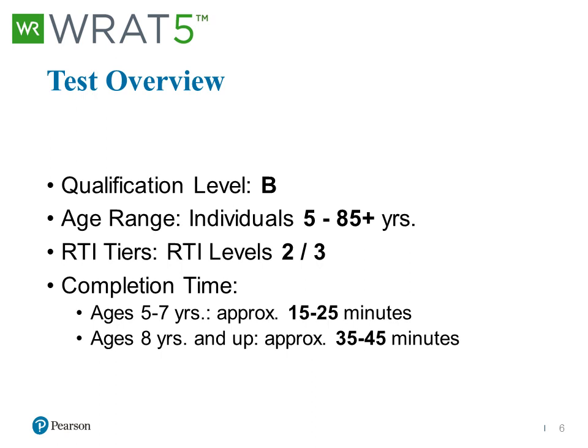In terms of an overview, the test is qualification level B. If you need additional information about what that means, please go to PearsonClinical.com, or .ca if you're in Canada. The age range is broad — from five years of age all the way through 85 and above — which allows us to use one single measure across a wide, varied range of clients. In schools, looking at response to intervention tier levels, we feel the WRAT5 is most applicable at the Tier 2 or Tier 3 level, giving us specific data about learning that goes beyond observational and classroom-type data.